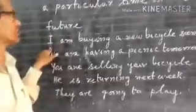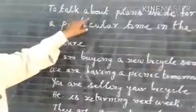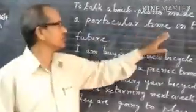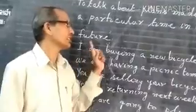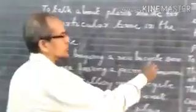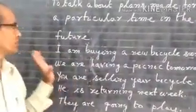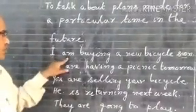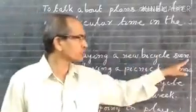We'll take some examples. 'I am buying a new bicycle.' To talk about plans made for a particular time in the future, we can use present continuous with future time. 'Soon' — S-O-O-N — is expressed in future time. So: 'I am buying a new bicycle soon.'